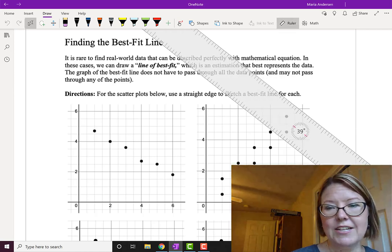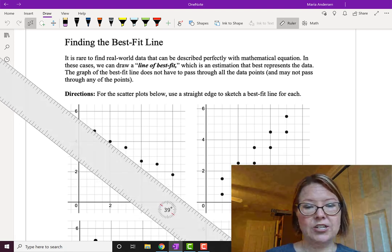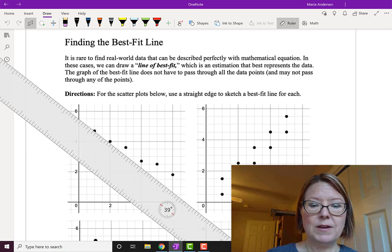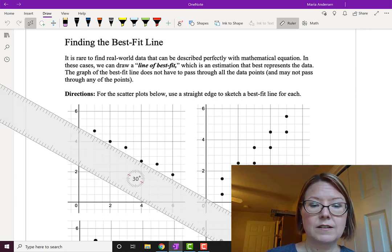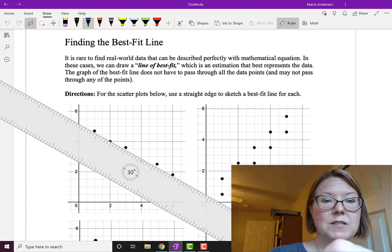We'll grab a straight edge and we'll kind of eyeball what a best fit line is. And we'll have to move our straight edge until it looks like we have about the right slope for the data. And that looks like about the right slope. And then we need to move it so that it's kind of in the middle of the data. That looks about right.